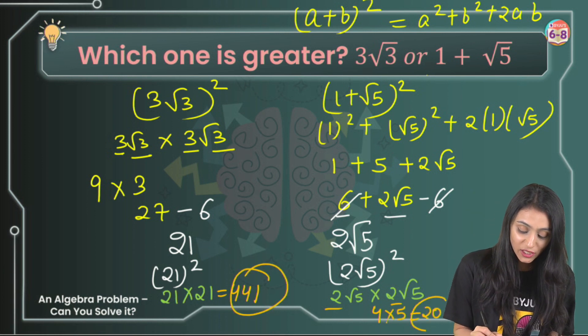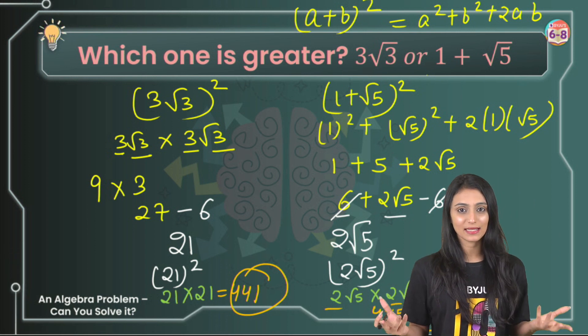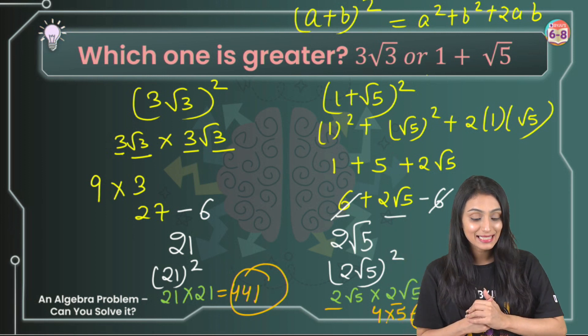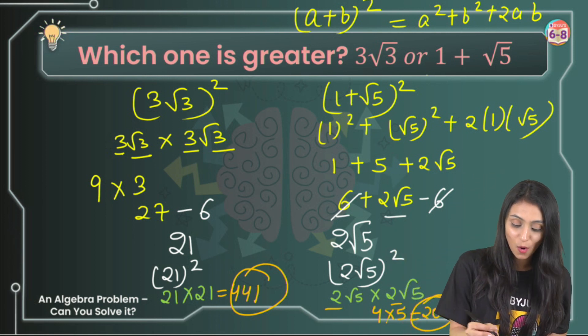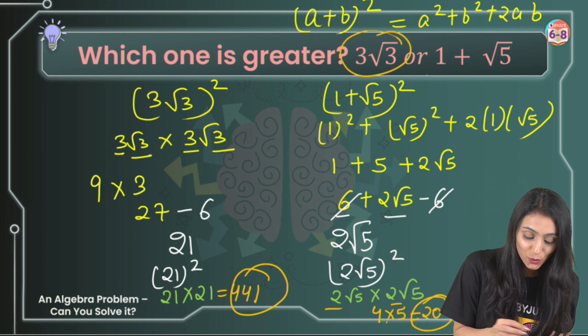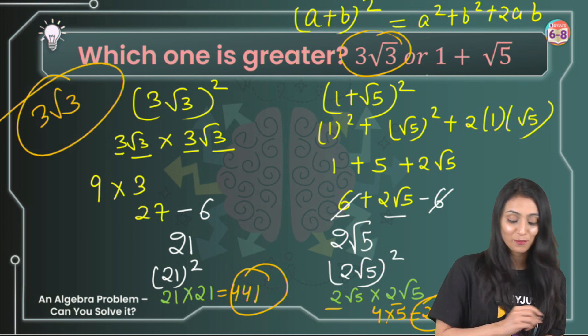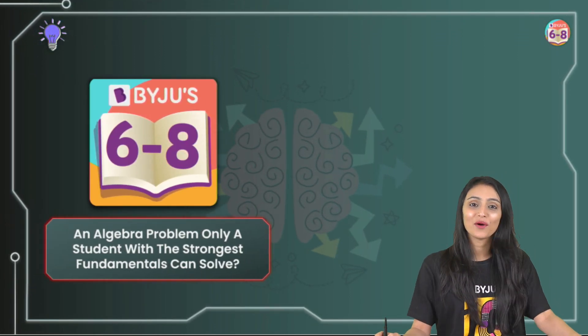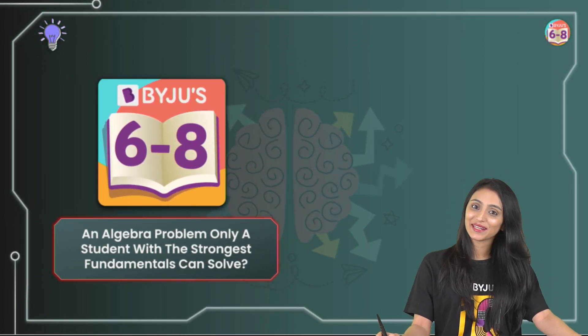441 and 20, that's very simple. It's easy to compare these numbers. Definitely 441 is greater. So now you can clearly tell which one is greater. Obviously, that's going to be 3√3. That's the greater number over here. Wasn't that an interesting one? Now leave a comment for me in the comment section how you like this question.